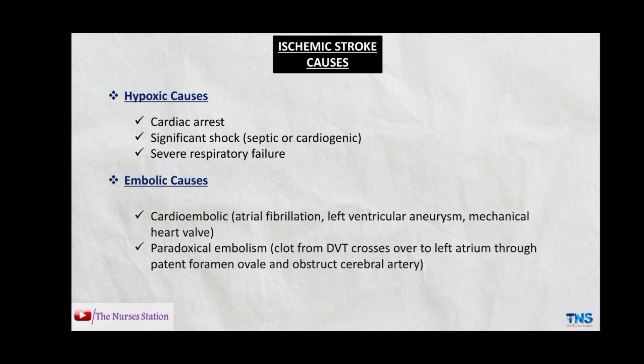The embolic causes include cardioembolic sources like atrial fibrillation, left ventricular aneurysm, and mechanical heart valve, and also paradoxical embolism. In paradoxical embolism, a clot comes from deep venous thrombosis, crosses over to the left atrium through a patent foramen ovale, and obstructs the cerebral artery. The foramen ovale is a hole in the inter-atrial septum present in the fetus, which normally closes within 24 hours after birth, but in some cases remains patent, allowing the clot to travel into the cerebral vasculature and cause ischemic stroke.